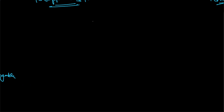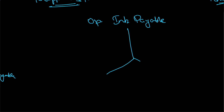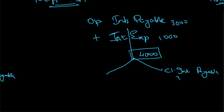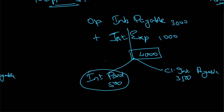Next is interest — a financing expense. Opening interest payable — say 3,000 — plus interest expense of 1,000 gives 4,000 to be paid. If closing interest payable is 3,500, then cash interest paid = 4,000 − 3,500 = 500.